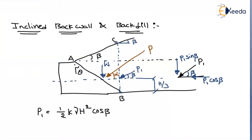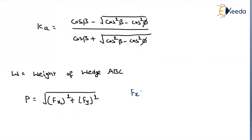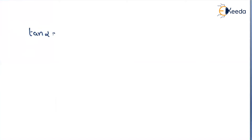So along the horizontal we have P1·cos β, and along the vertical we have W and P1·sin β. Therefore Fx = P1·cos β and Fy = W + P1·sin β. Substituting into the equation gives the final earth pressure P acting on the inclined backfill. Similarly, tan α = (W + P1·sin β) / (P1·cos β).